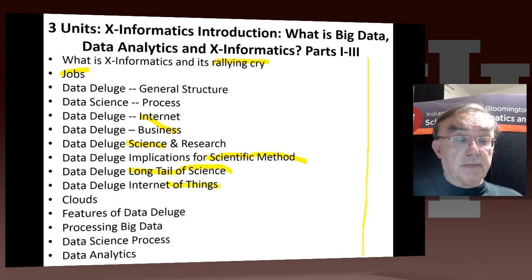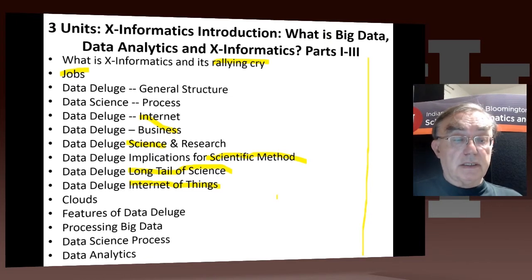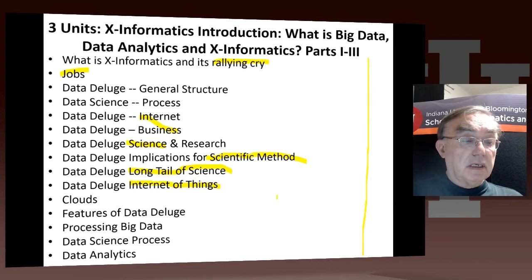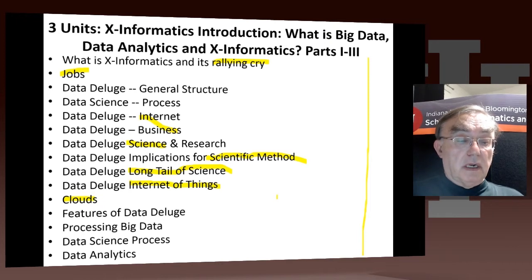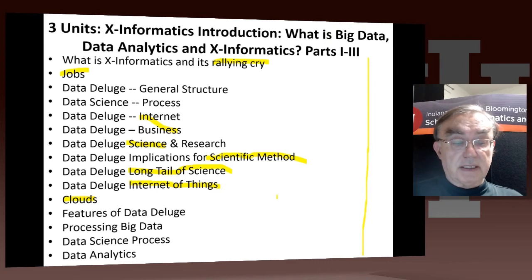The Internet of Things, where by 2020 some 25 to 50 billion devices will be on the Internet, is an important aspect of the data deluge. Clouds, of course, are the core infrastructure used to do all of this. We describe some general features of the data deluge, how you use that to process big data, what the data science process is, and what data analytics is.